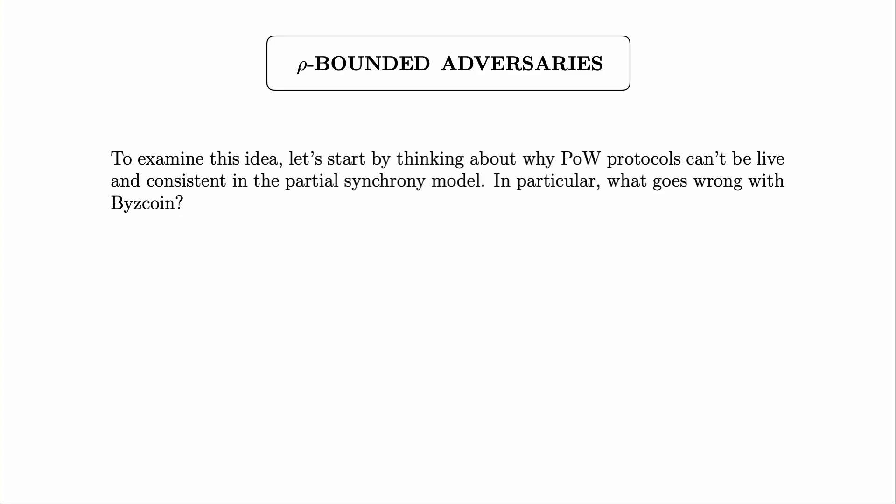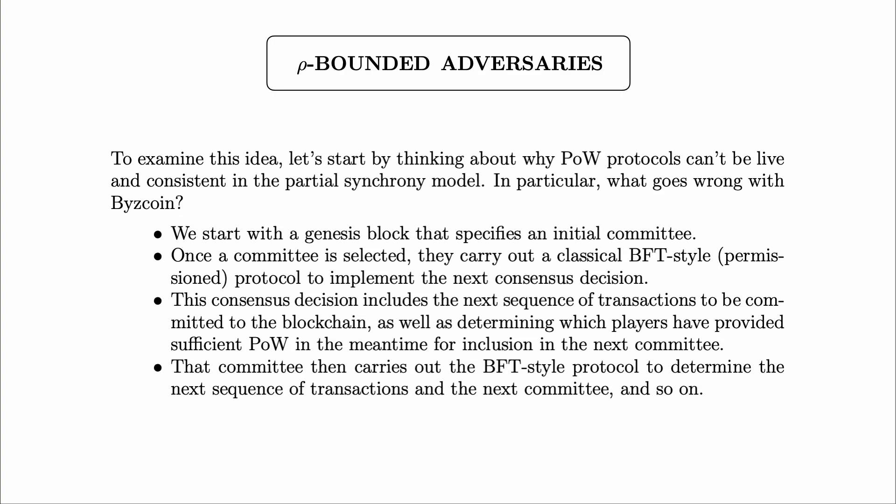To examine it further, let's start by thinking about why proof-of-work protocols can't be live and consistent in the partial synchrony model. That might not initially sound relevant but it is. What goes wrong with BizCoin, hybrid, or Solida? We previously considered a generic form of a proof-of-work protocol — a proof-of-work protocol that integrates BFT-style protocols. You need to think about a proof-of-work protocol which starts with the genesis block that specifies an initial committee. Once a committee is selected they carry out a classical BFT-style permissioned protocol.